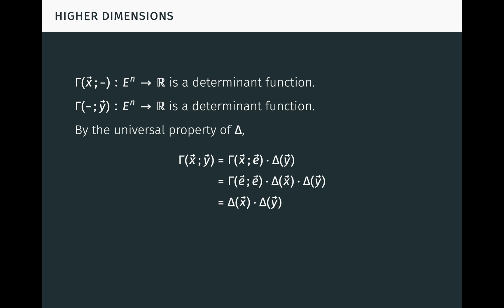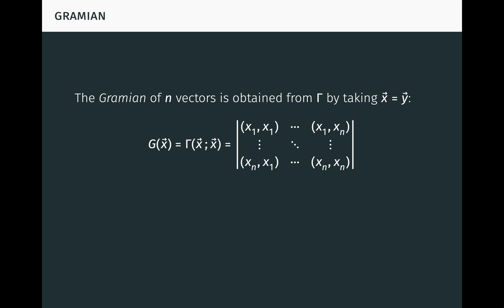So gamma is the product of delta with itself. It's important to note that this relation holds for any normal determinant function delta — it doesn't depend upon the particular choice of determinant function and orthonormal basis we made earlier. Now the Gramian of n vectors is obtained from gamma by taking x equal to y, like this. As before, we use the letter g. So the Gramian consists of the inner products of the x's with themselves. It follows that g of x1 to xn equals delta of x1 to xn squared. This fundamental relation generalizes the one we saw earlier in the case of n equal to 2.